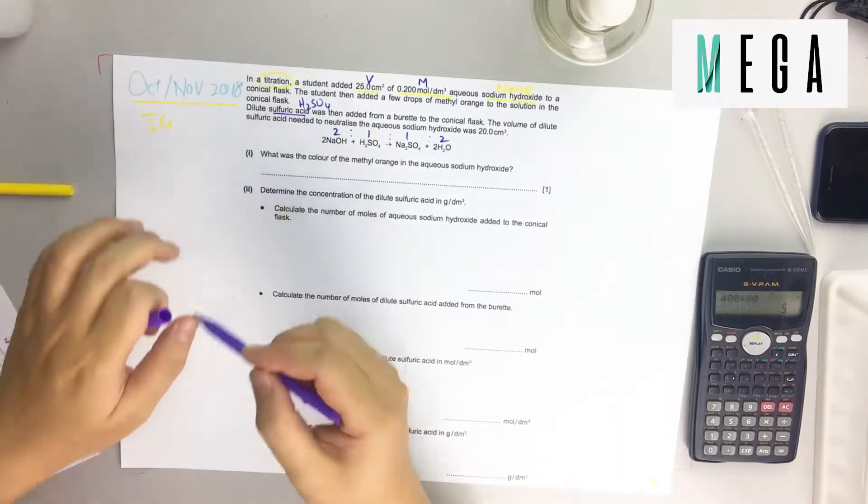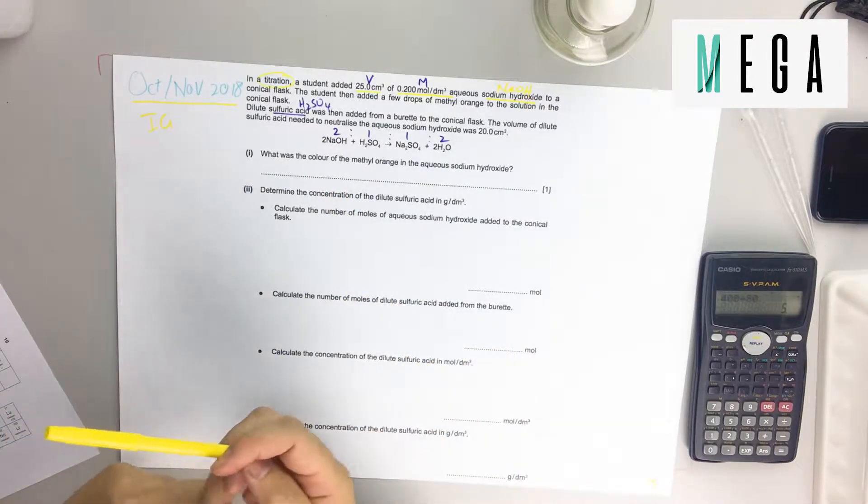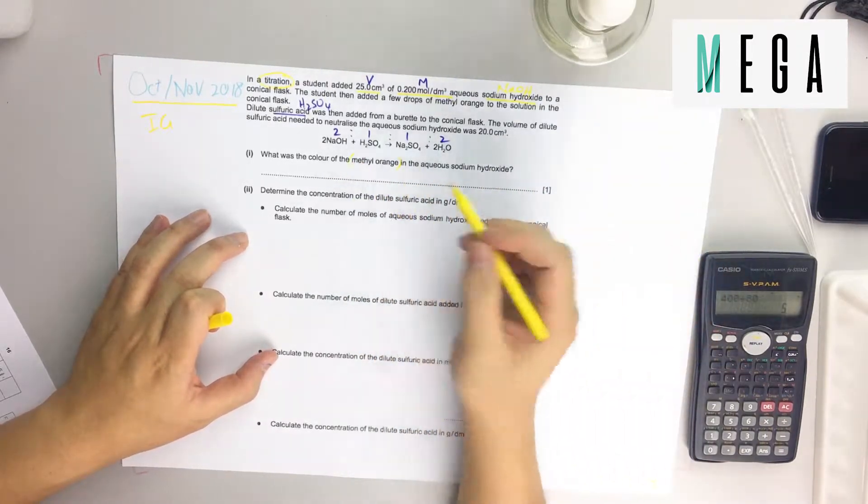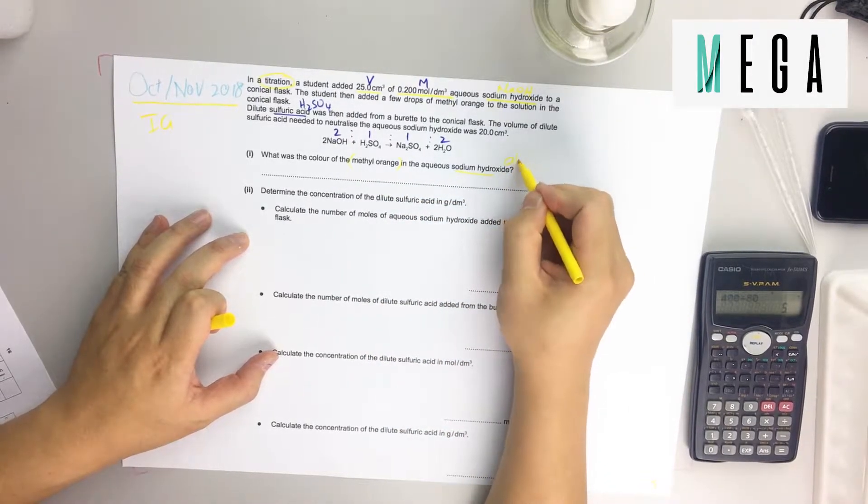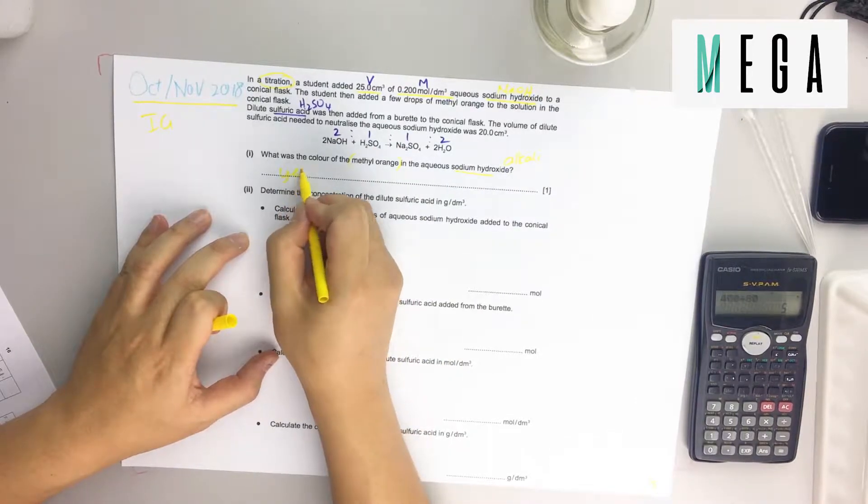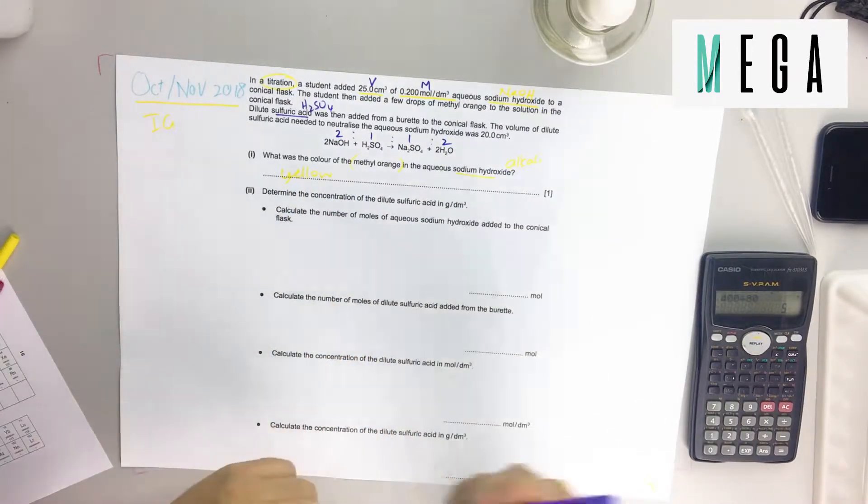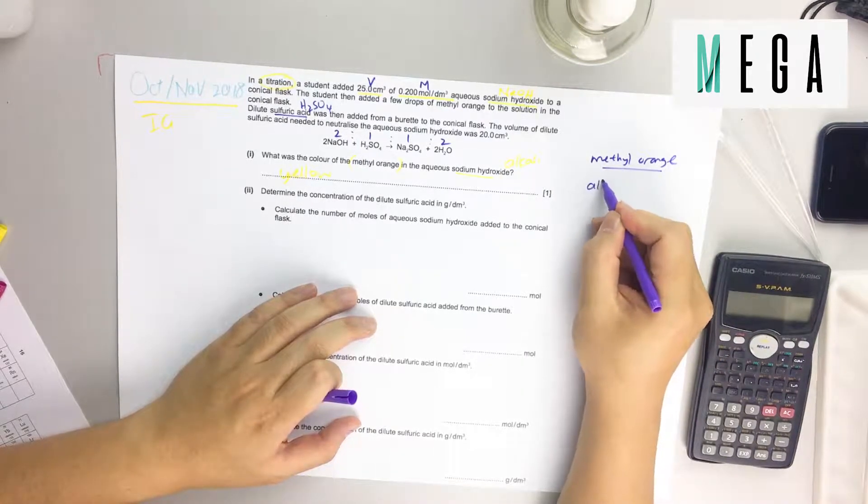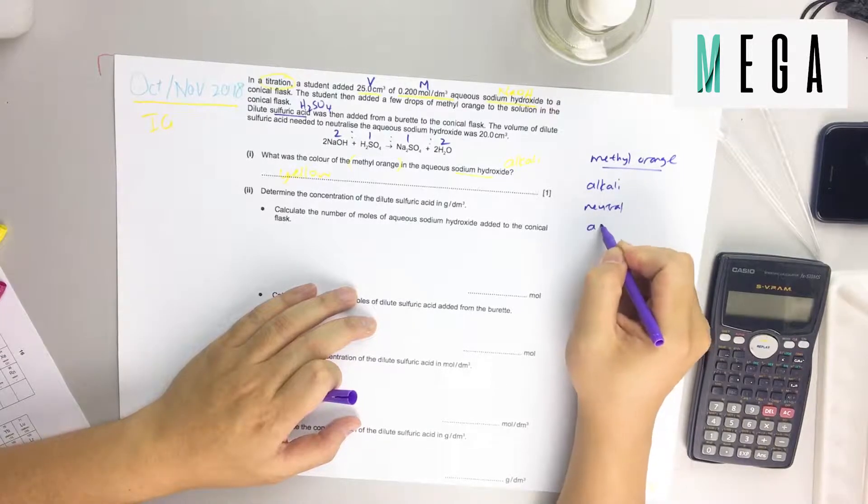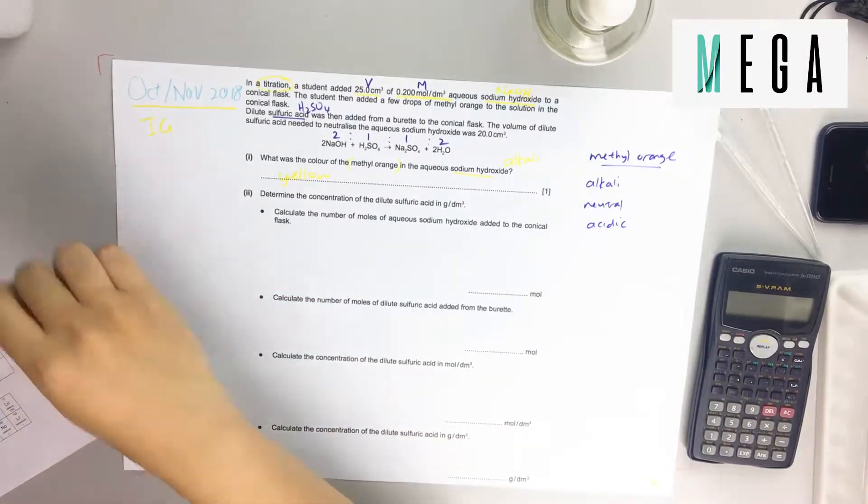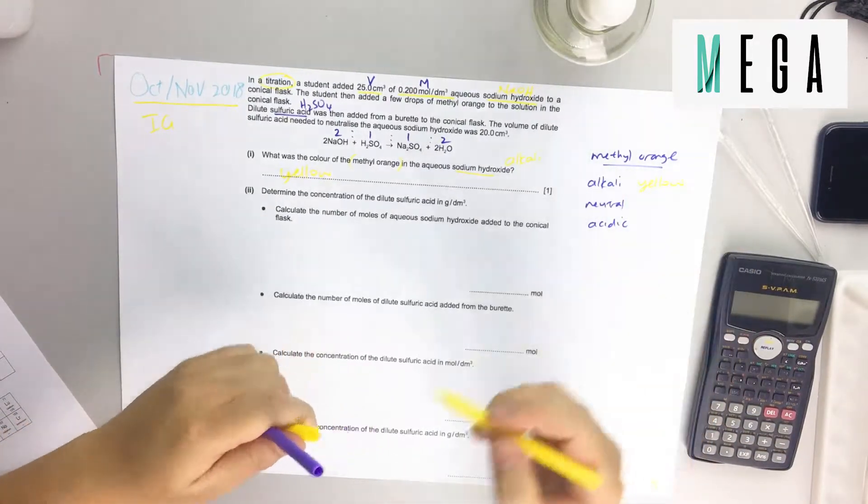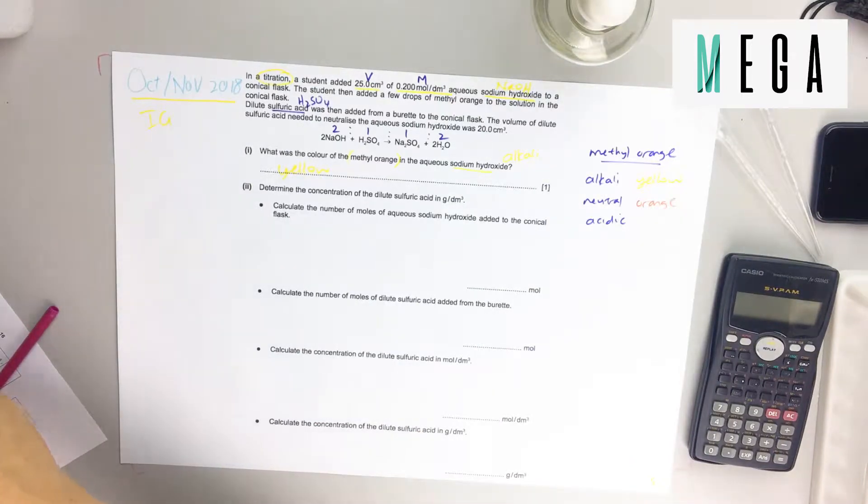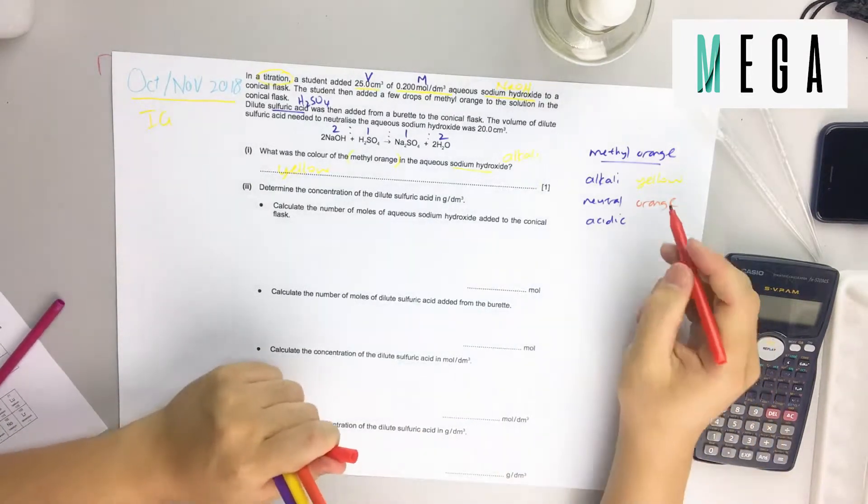Question one asks what is the color of methyl orange in the aqueous sodium hydroxide. You need to remember from the acid and base chapter about neutralization. Sodium hydroxide is an alkali, so alkaline when tested in methyl orange is yellow. When it's neutral it will be orange. When it's acidic, it's red, representing danger.